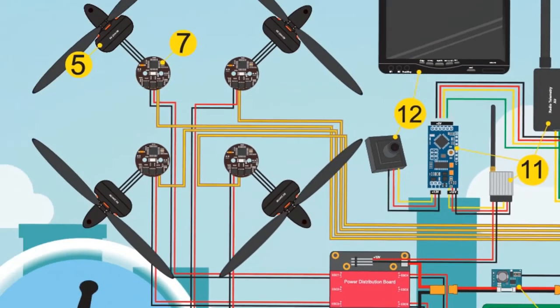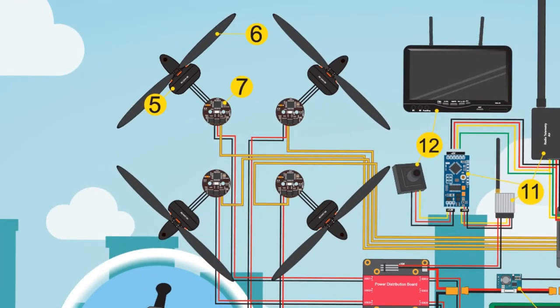Motors are of the brushless type, which is more efficient. Motors and propellers should theoretically push two and a half times the weight of the drone in order to fly. A key parameter to know is KV (kilovolt) rating.